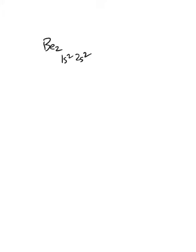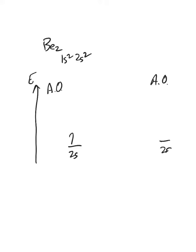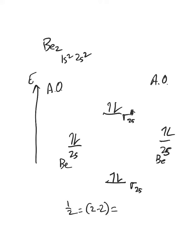Let's go to beryllium, Be2. Beryllium is 1s², 2s². Looking at the atomic orbitals, we only care about the 2s orbitals from each beryllium atom — they each have filled 2s orbitals. We make a sigma 2s and a sigma star 2s. Four electrons go to the lowest available energy levels, pairing them up as we go. Visually, the antibonding cancels out the bonding: one-half of (2 minus 2) equals zero. We won't see Be2 according to molecular orbital theory.